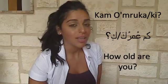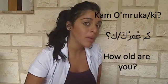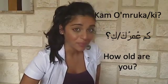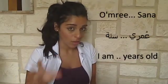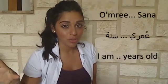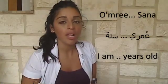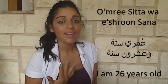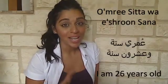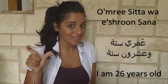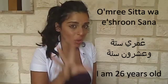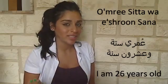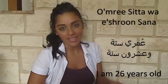To say 'I am X years old,' I have to say عمري, then the number, and then سنة, which means years. For example, عمري ستة وعشرون سنة — I am 26 years old. So 'years old' we translate as سنة in Arabic.